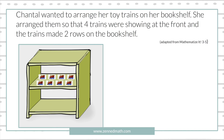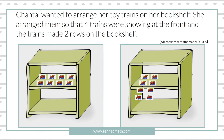There's four trains showing in the front and two rows were made. Because these items physically appear in an array form, it doesn't necessarily mean it's an array. The factors are not interchangeable — if we flipped it, the trains wouldn't even fit on the shelf. So this is actually an equal groups word problem that looks like an array. It has to be two groups of four in order for it to fit on the bookshelf.